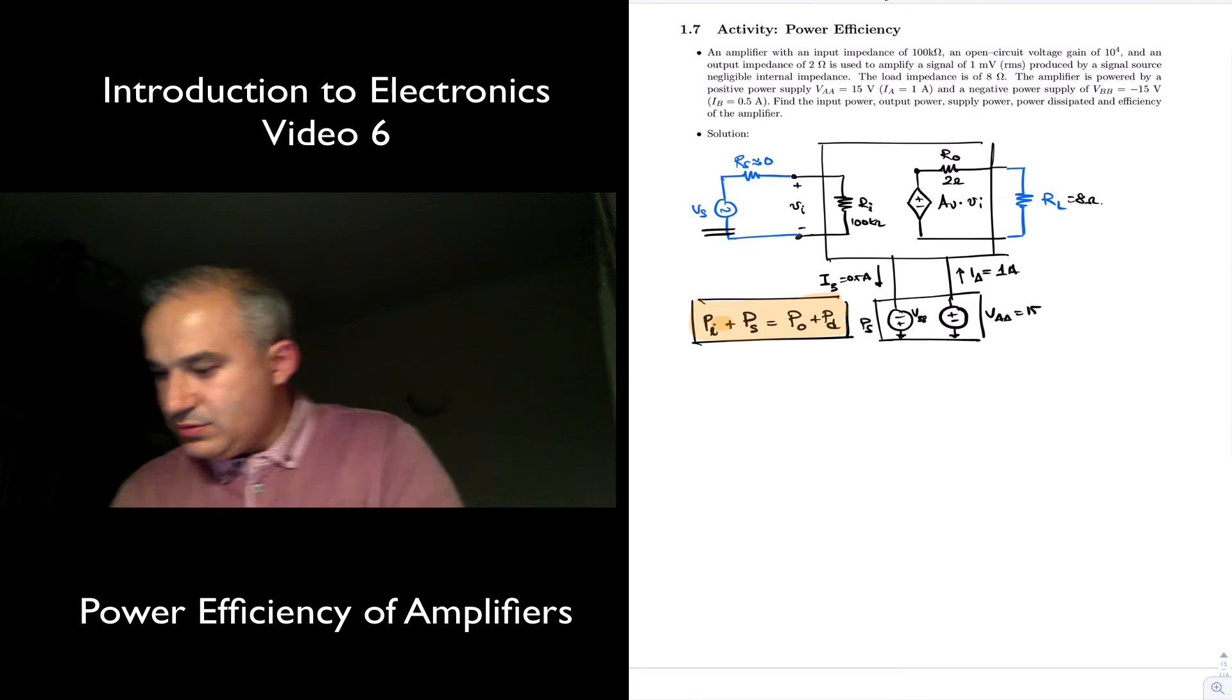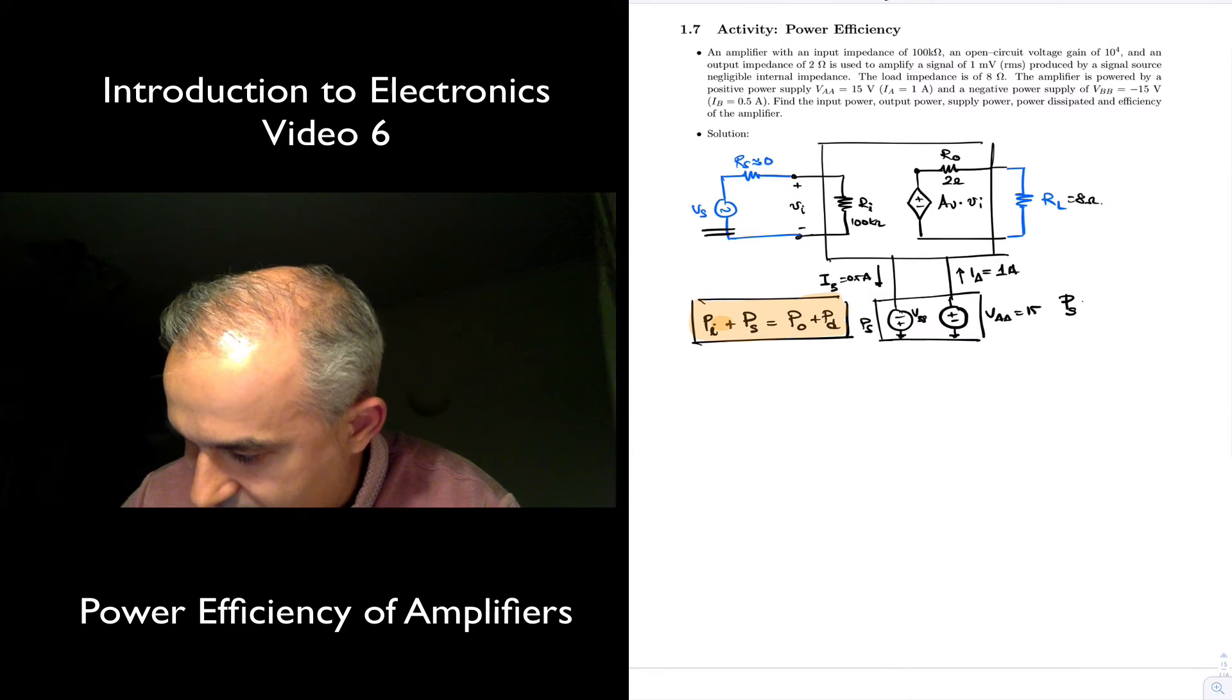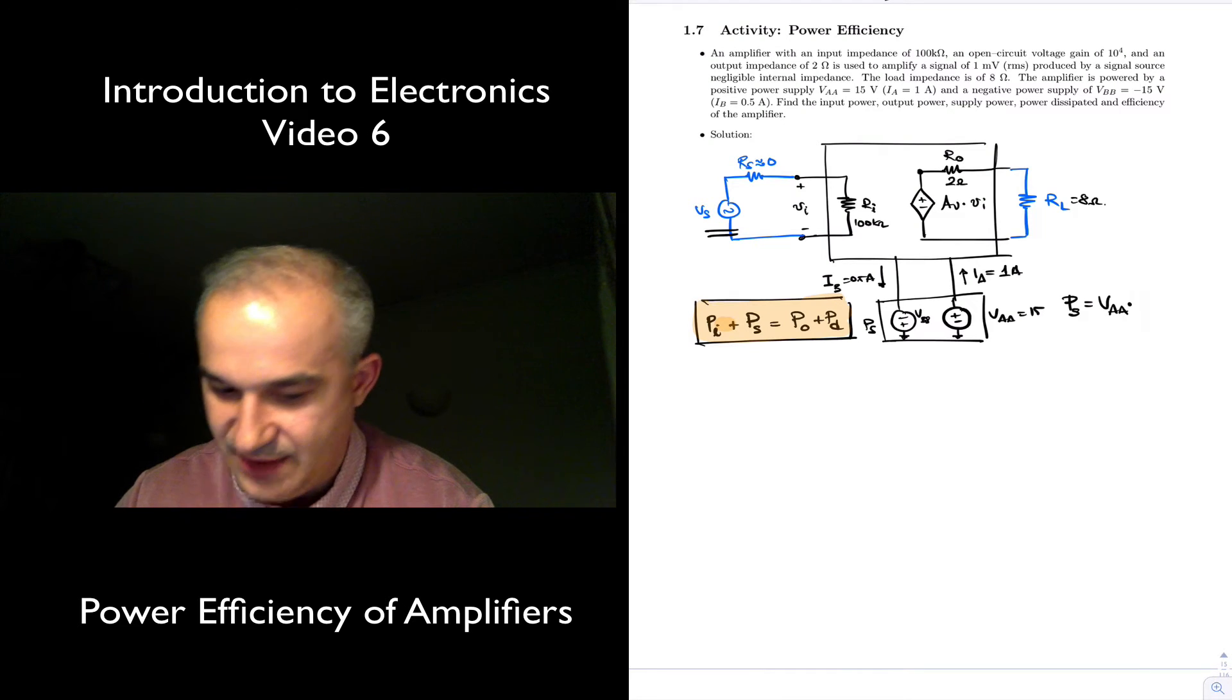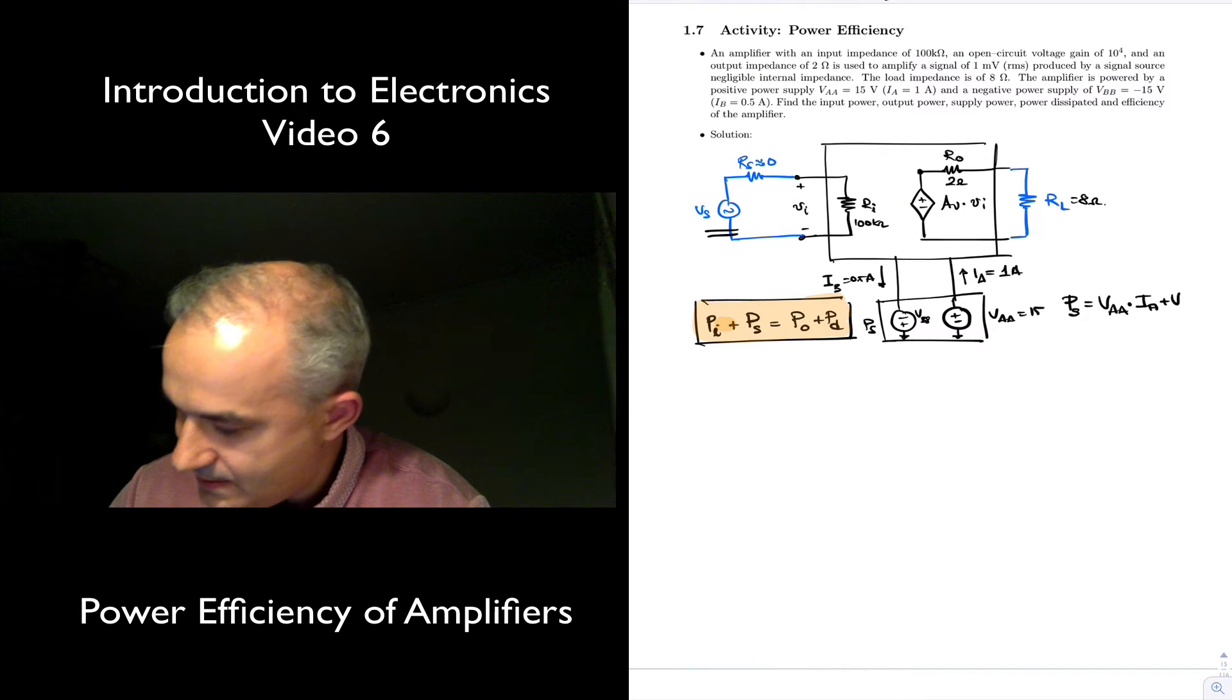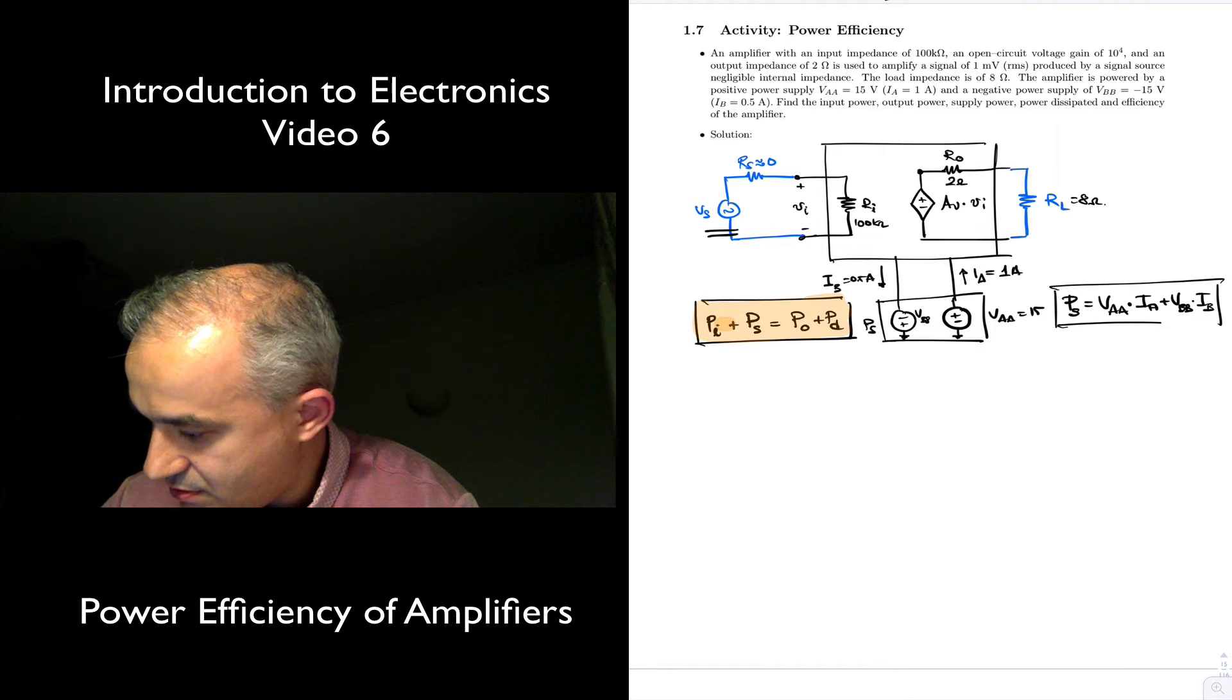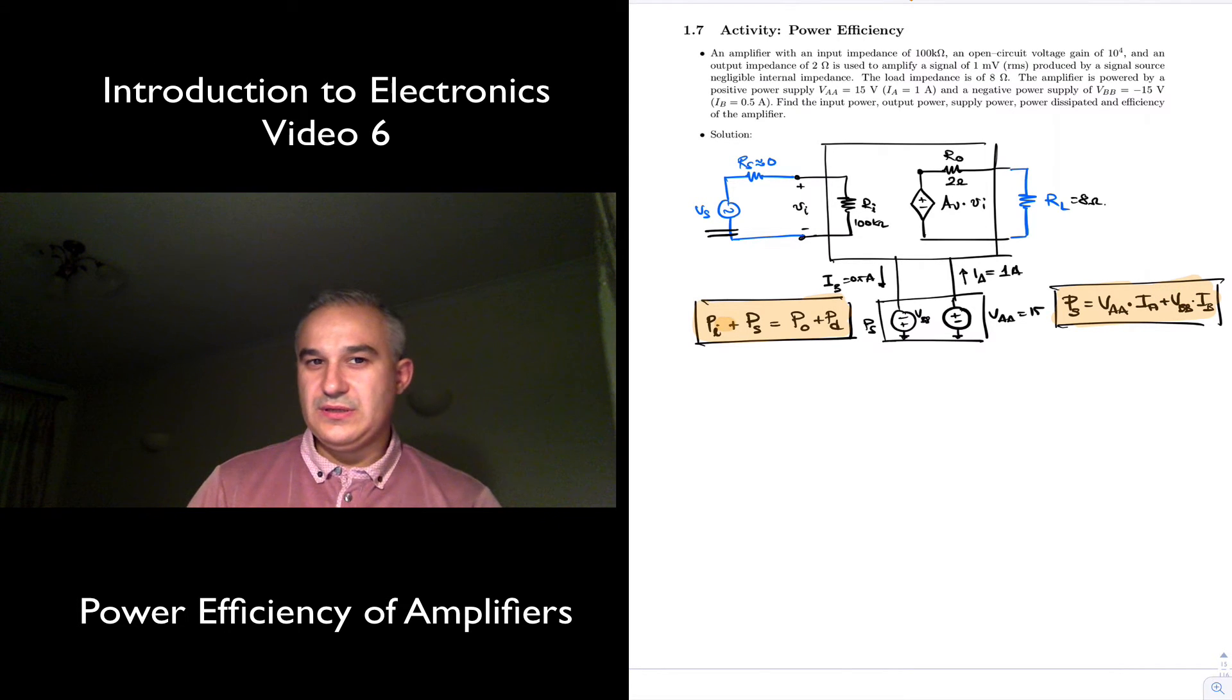And so, well, let's think about what is the power supply. The power supply also, the power supply is equal to voltage times current. So it is VAA times the current, plus VBB times the current through that source. This is just a positive and negative voltage, DC voltage source.